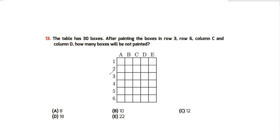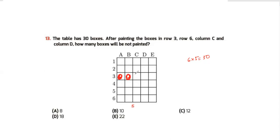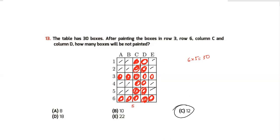Question number 13: the table has 30 boxes — 6 columns and 5 rows. After painting the boxes in row 3, row 6, column C, and column D, how many boxes will not be painted? Rows are horizontal and columns are vertical. Painting row 3, row 6, column C, and column D covers those cells. Counting what remains unpainted: 1, 2, 3, 4, 5, 6, 7, 8, 9, 10, 11, 12. My answer is option C, which is 12.